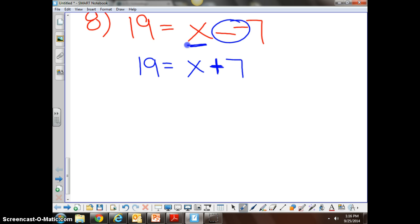So I'm going to subtract 7 from the right side of the equation, and I'm going to subtract 7 from the left side of the equation so I can keep them balanced.